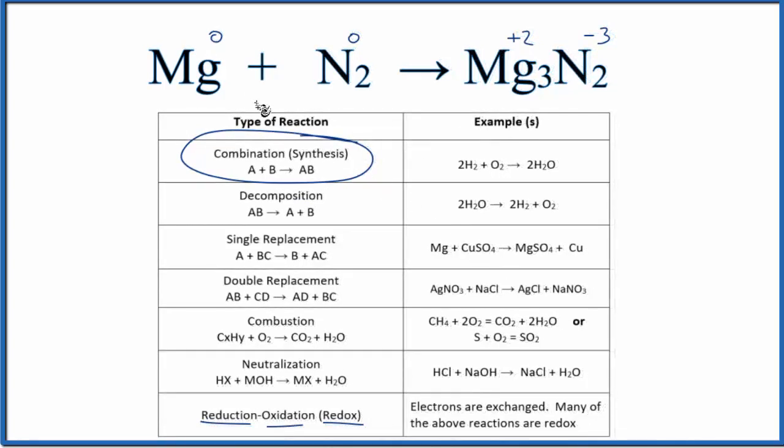One last thing. We probably should balance the equation. And it looks like all we need to do is put a three in front of the Mg here. So we have three magnesium atoms, three here, two nitrogens, and two here.